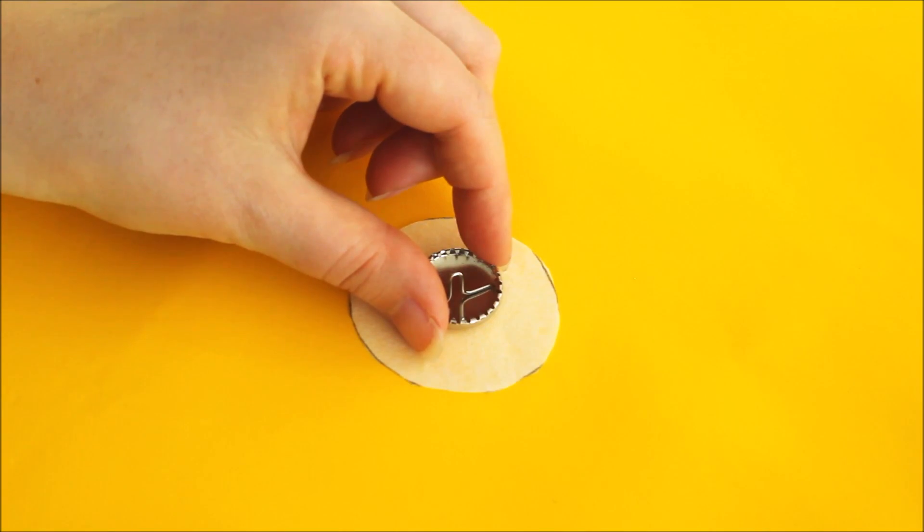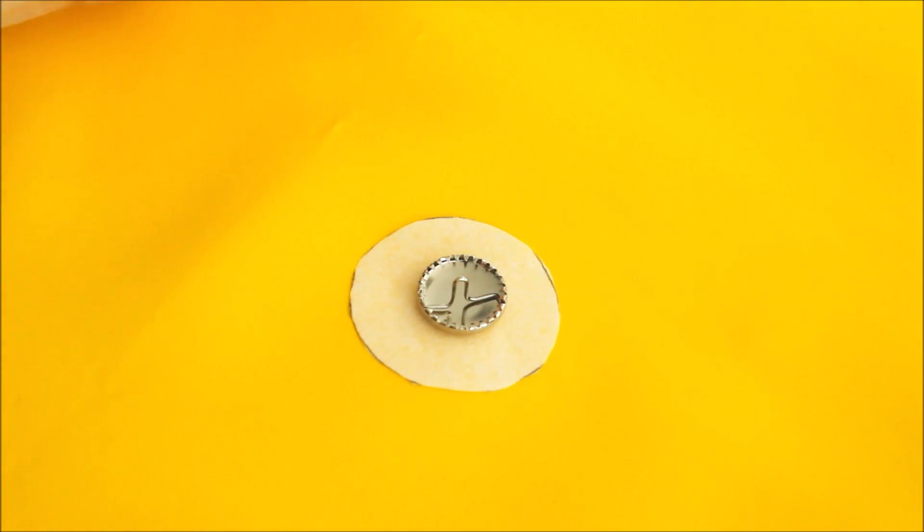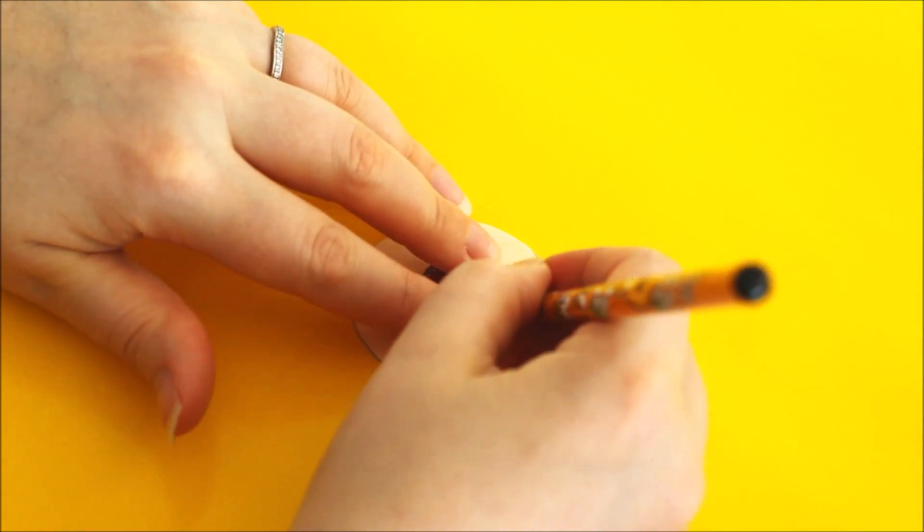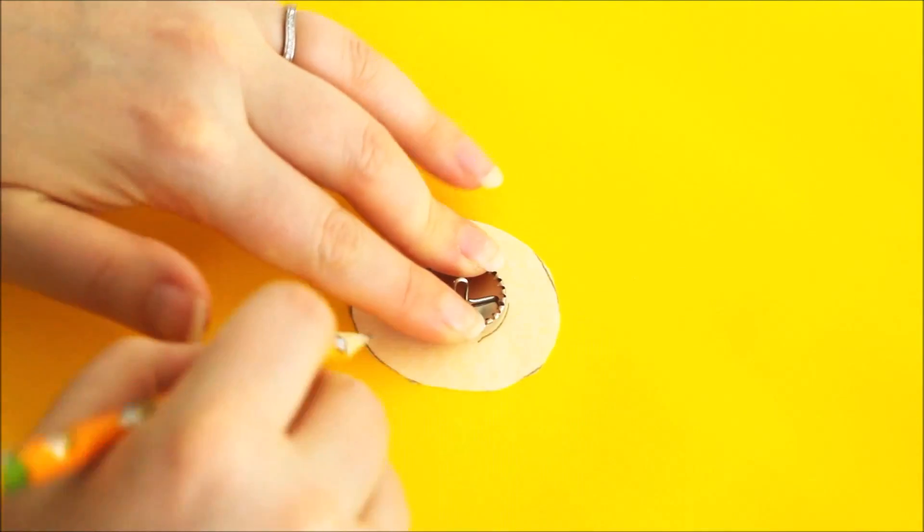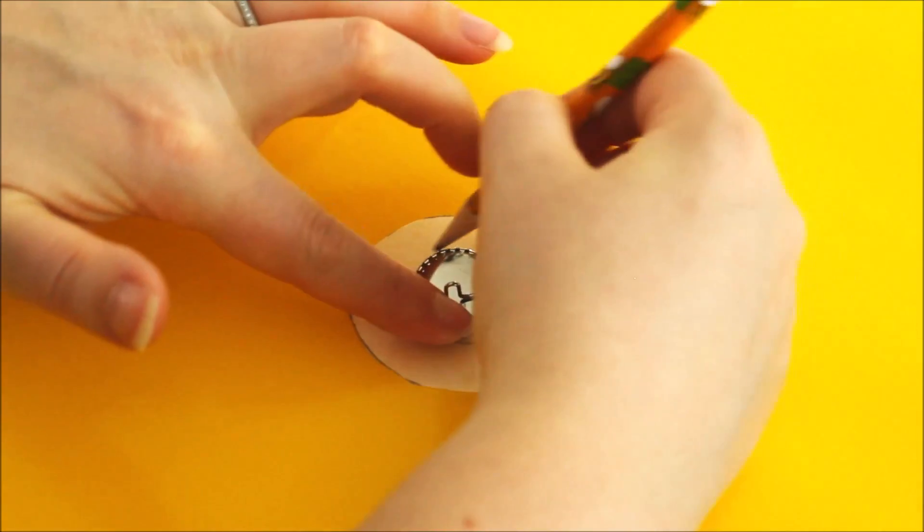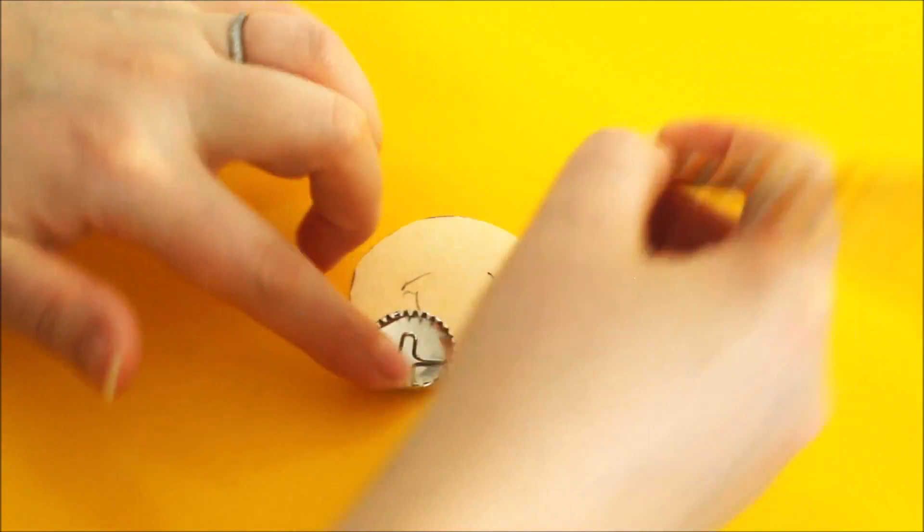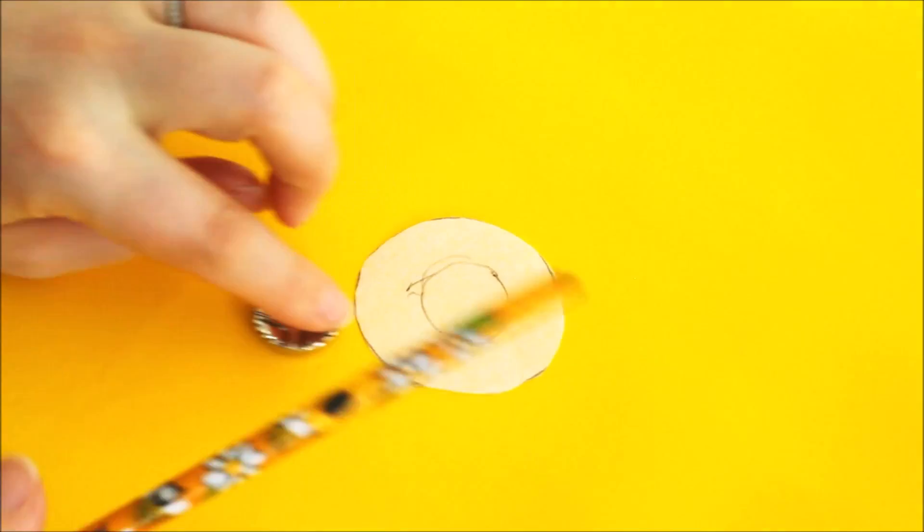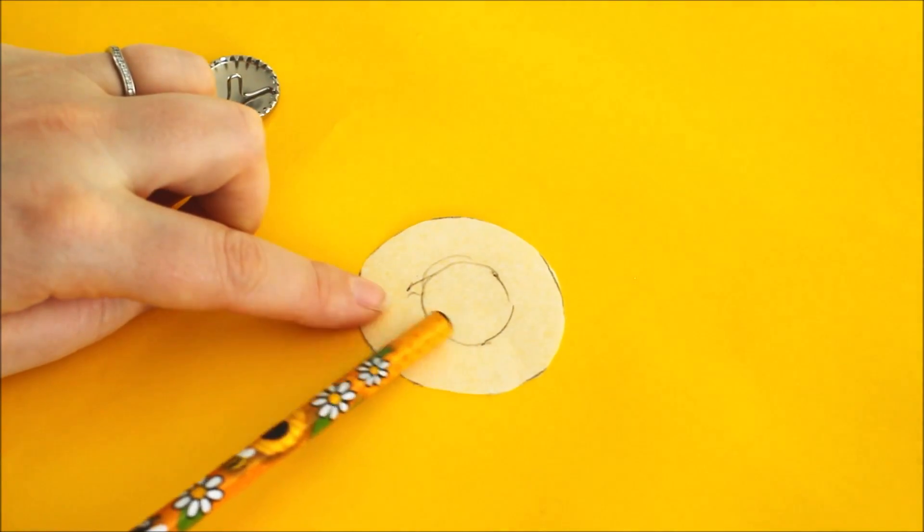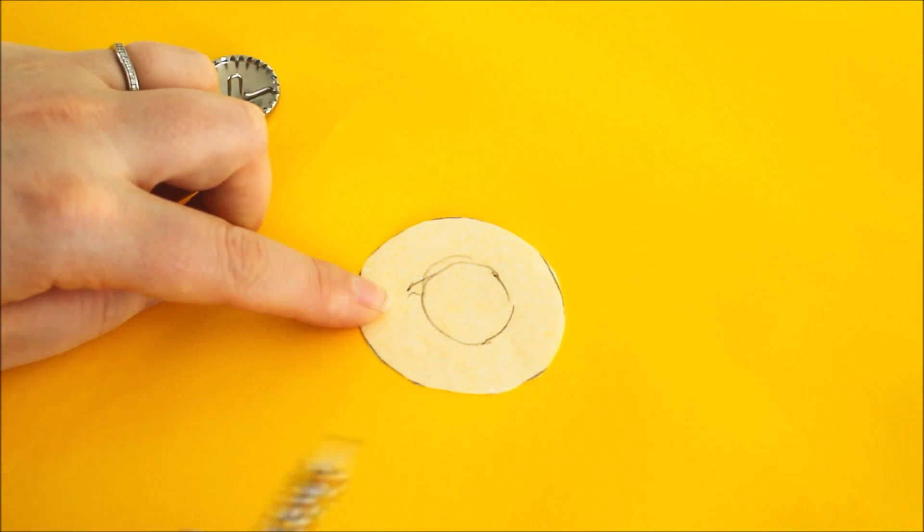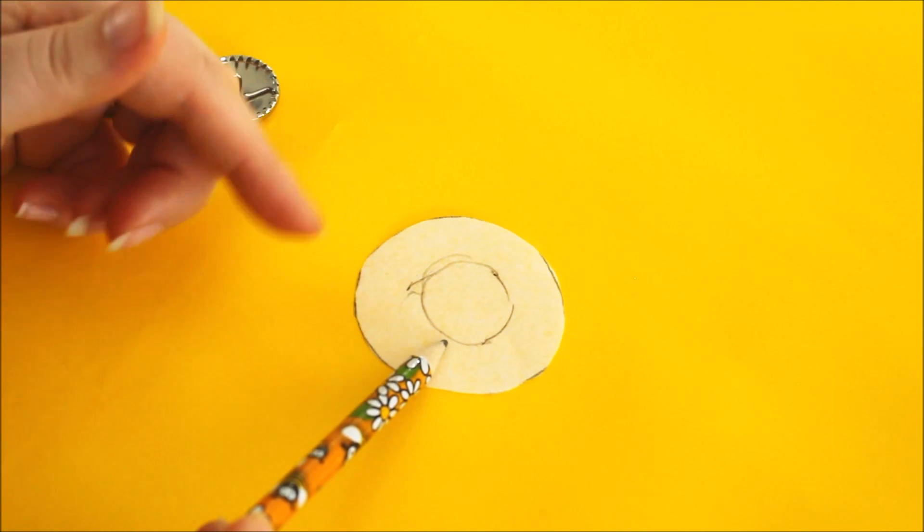Now what I like to do next that isn't on the instructions is to make it easier to fussy cut my buttons. So what you need to do is just place your button right in the centre and then with your pencil, you just want to have a rough circle marked around. Now when you're then cutting out your fabric, you know that this is going to be the only visible part of the button. The rest of it is going to be hidden underneath where it joins up inside.